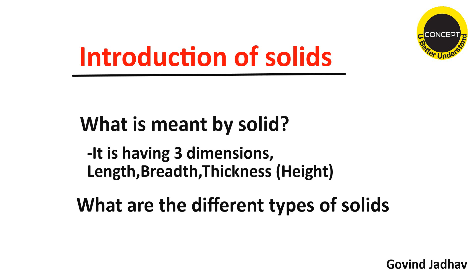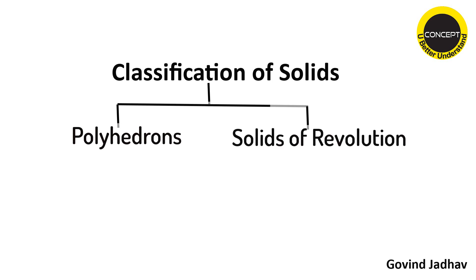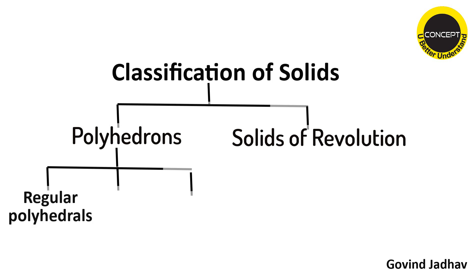What are the types or classification of solids? Solids are mainly divided into two types: one is polyhedrons and the second is solids of revolution. Polyhedrons are subdivided into three types: regular polyhedrons, prisms, and pyramids. In solids of revolution there are three solids: cylinder, cone, and sphere.